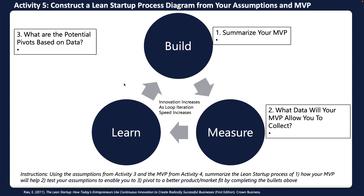That leads to the Build-Measure-Learn loop, which Andrew introduced in the first videos and will be a constant refrain throughout this course. You summarize your MVP, identify the data you'll collect and potential pivots, then rebuild, go out and test, and learn. In each iteration, the goal is to reduce uncertainty and increase confidence — which ultimately increases your chance of success.